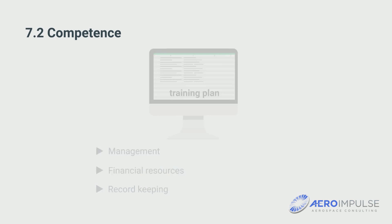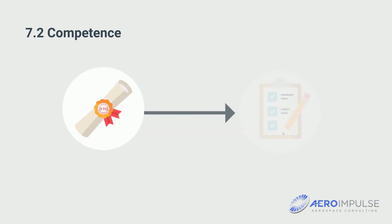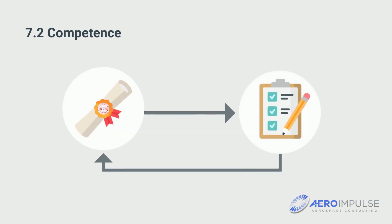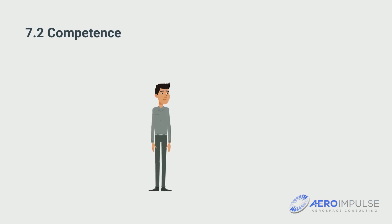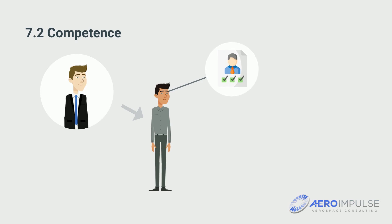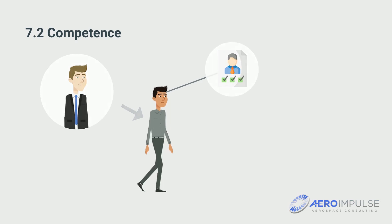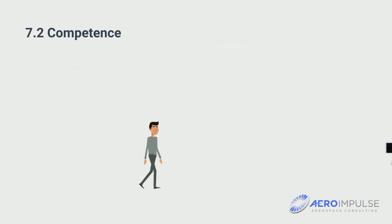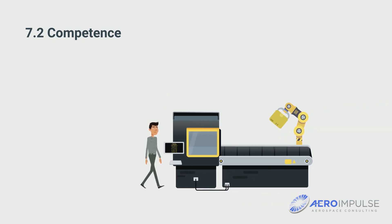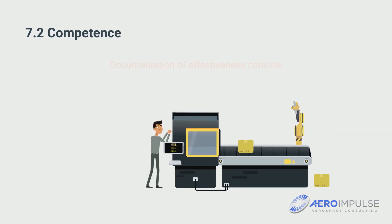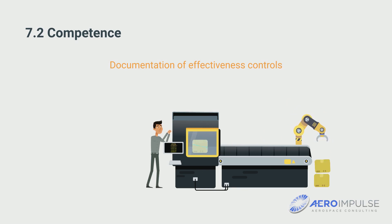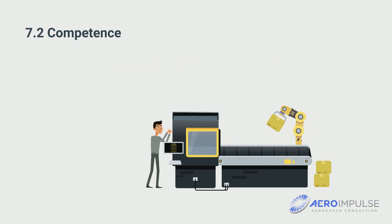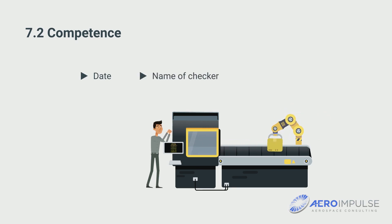It is often forgotten that an effectiveness check is required after the qualification measure. The focus is on checking whether the trainee has understood the contents and whether the trainee is applying the learning objectives in everyday business life. Effectiveness checks are generally to be documented with the date of examination, name of the checker, and object of checking.